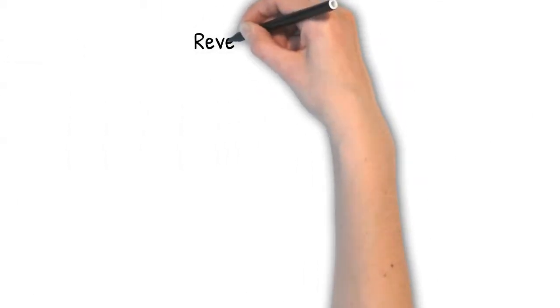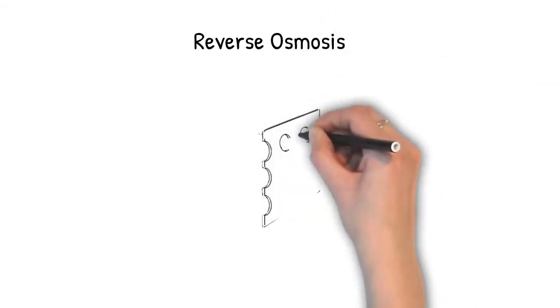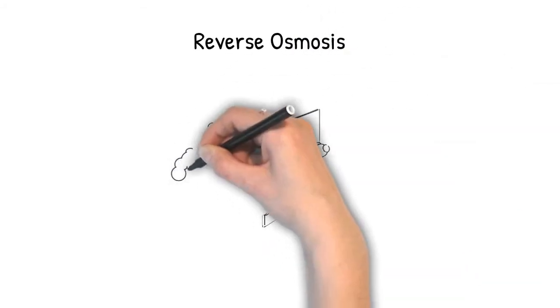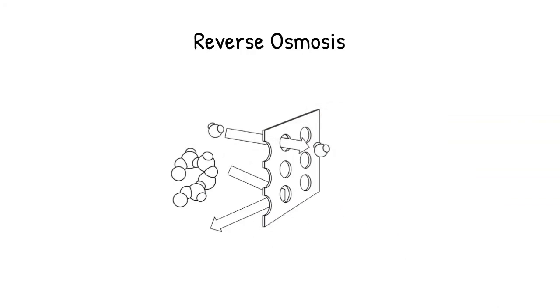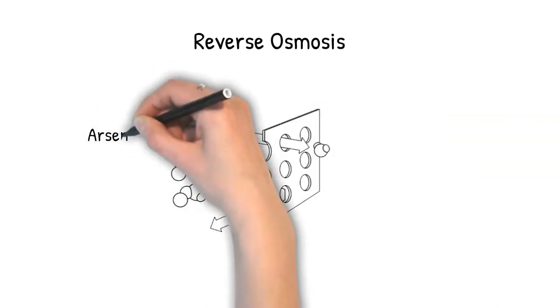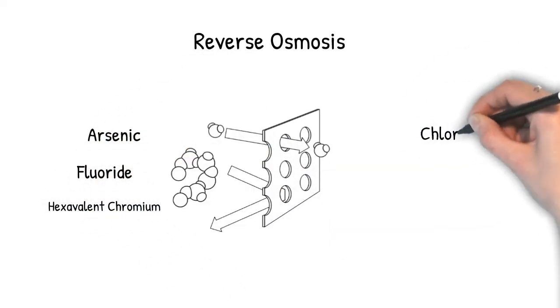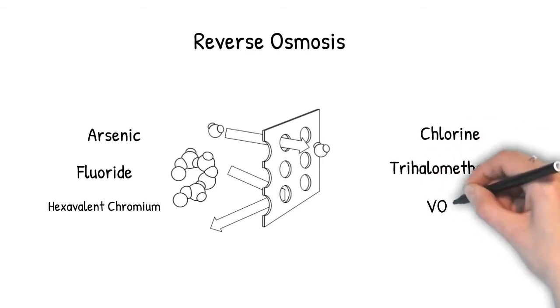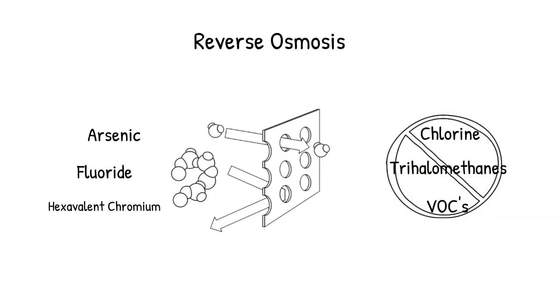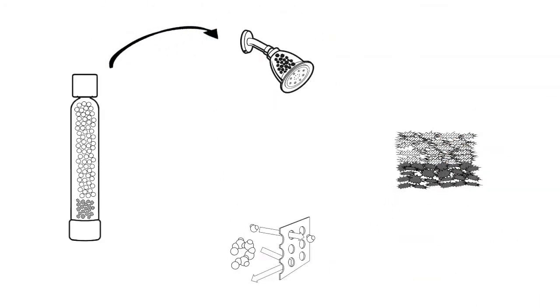Reverse osmosis is the process of filtering the water at a molecular level, blocking any particles larger than a water molecule. It is very effective at removing many contaminants like arsenic, fluoride, and hexavalent chromium. However, it doesn't remove chlorine, trihalomethanes, or VOCs. Separately, none of these four systems are a complete solution. However, when combined properly, they can work hand in hand as a complete solution.